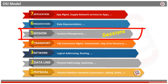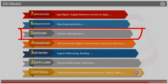It is called the port layer as well. The main function of the session layer is to establish, maintain, and synchronize the interaction between communicating systems. It allows information of different streams originating from different sources to be properly combined and synchronized.